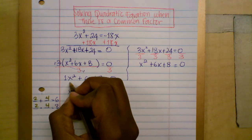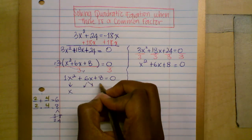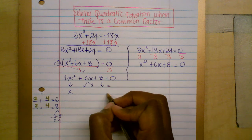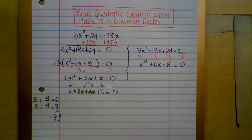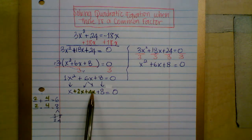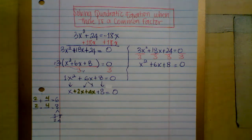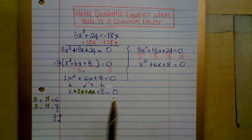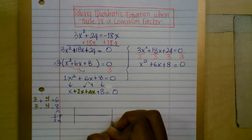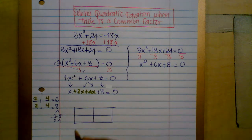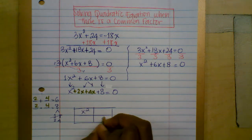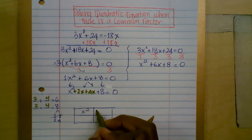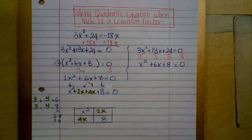Next, you're going to replace the middle term with the two found numbers. So replace 6x with 2x plus 4x, since 2x plus 4x adds up to 6x — you're not changing the equation, just rewriting it. This makes it easier to factor by grouping or by the box method. Let me do the box method. In the box: write x² in the top left and the constant 8 in the bottom right, then 2x and 4x in the remaining corners.